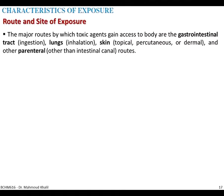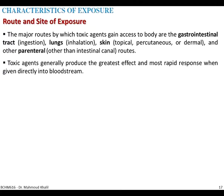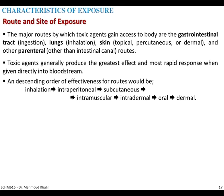Let's talk about the route and site of exposure. There are major routes by which toxic agents can access the body. Toxic agents generally produce the greatest effect and most rapid response when given directly into the bloodstream. The descending order of effectiveness of routes is: inhalation is the most severe, followed by intraperitoneal, intramuscular, intradermal, oral, and dermal — dermal administration has the lowest effectiveness.